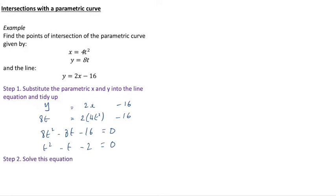Step 2. Solve that equation. Well that's deliberately a nice and easy quadratic equation to solve. So we can factorize to (t - 2)(t + 1) = 0 and that means we have t = 2 or t = -1.